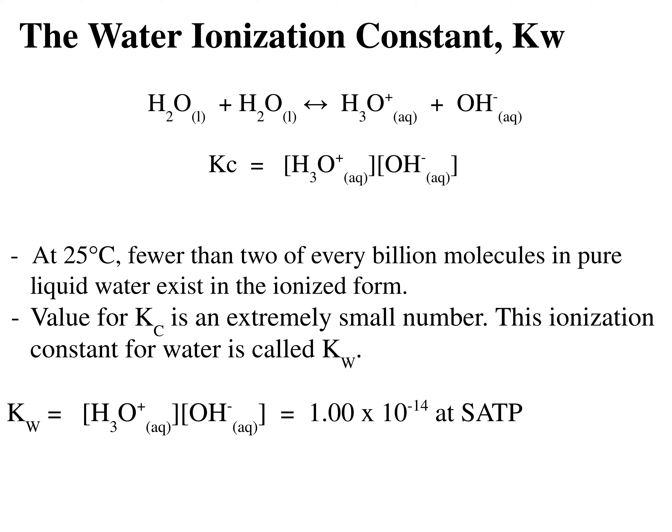When water reacts, it can actually react to form hydronium and hydroxide ions in very low concentrations. That concentration for both of those is 1×10⁻⁷. We can use that to calculate what the Kc value for water is, and at 25 degrees Celsius and SATP, we know that Kc is equal to 1.00×10⁻¹⁴.